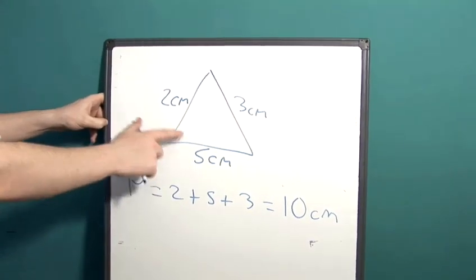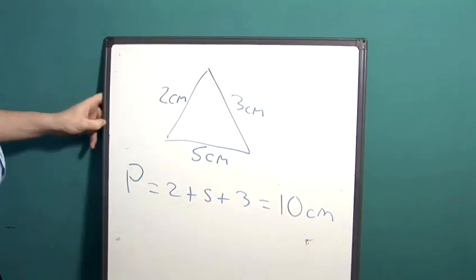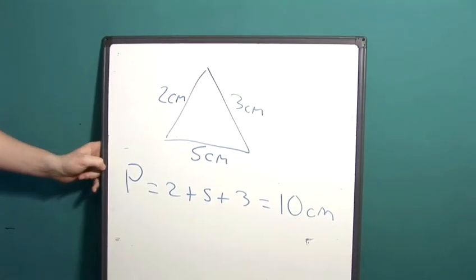So for us, that was two plus five plus three, which gives us ten, and we remember that we're dealing with centimetres. And that's how you find the perimeter of a triangle.